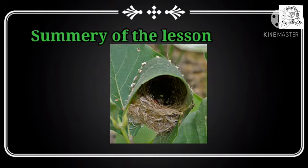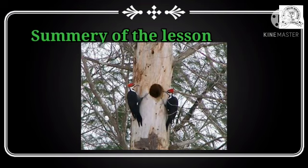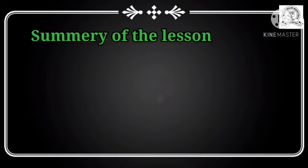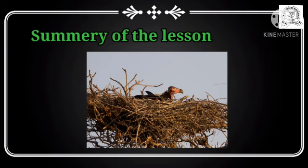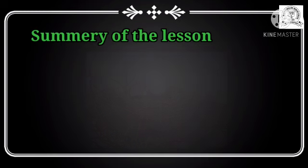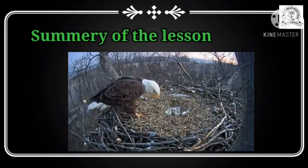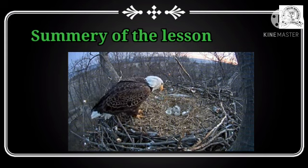The woodpecker has a chiseling beak and uses it to make holes in tree trunks to make a nest, placing fine grass inside for warmth. The vulture builds its nest on high rocks or hills using sticks, with fine grass inside for warmth.